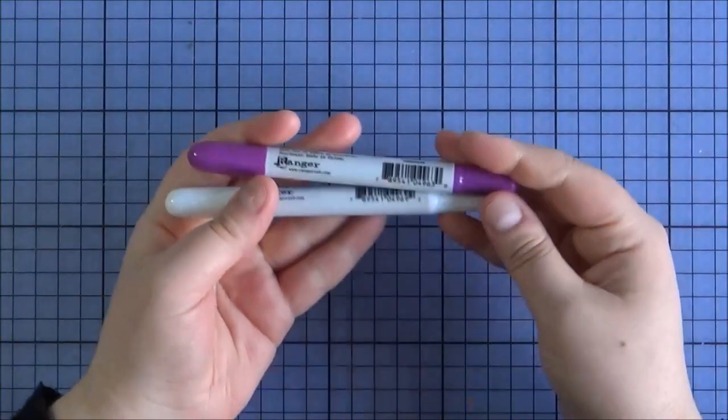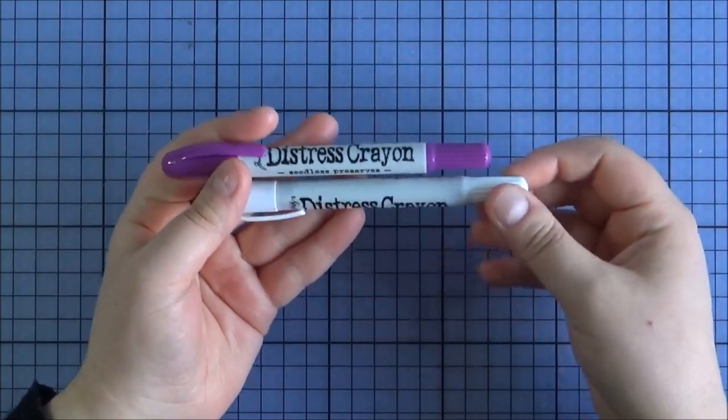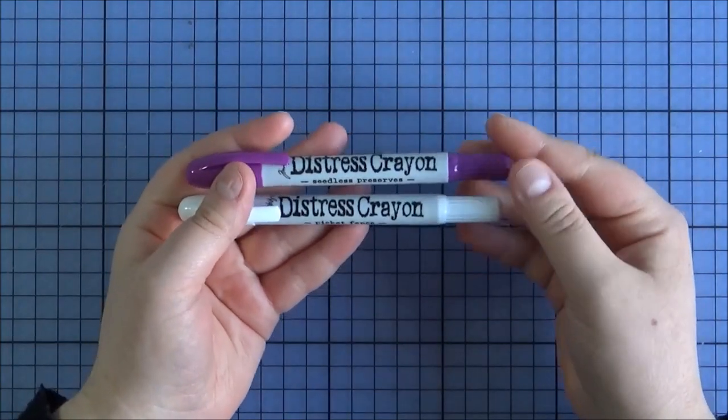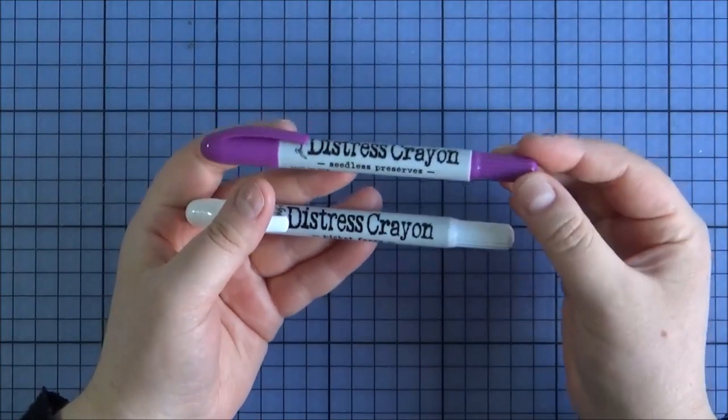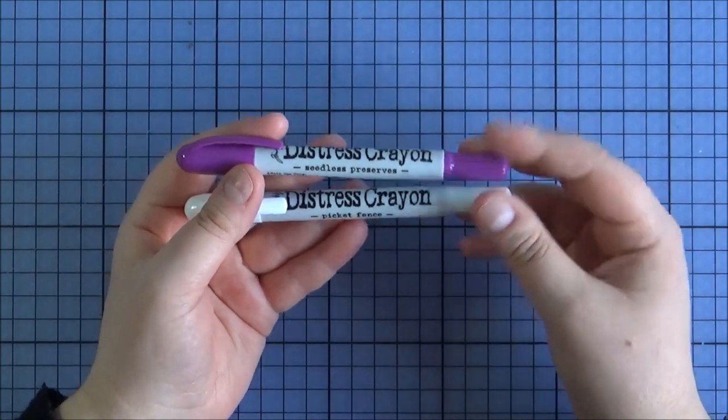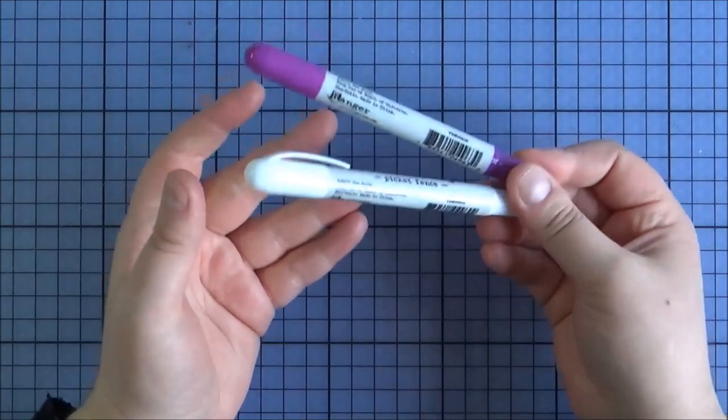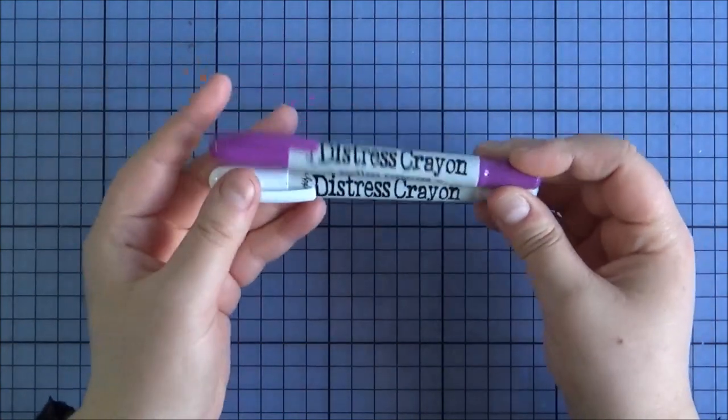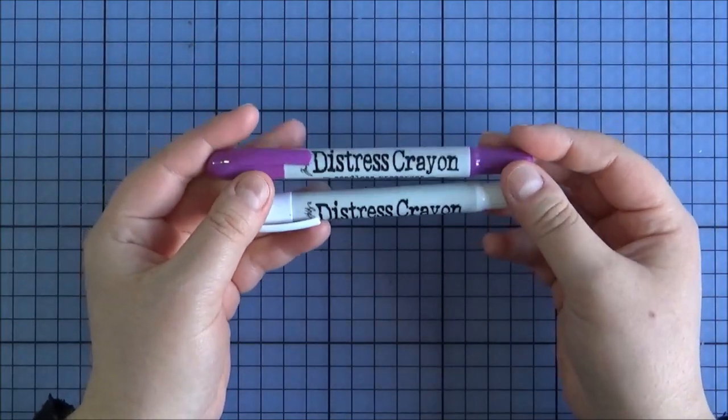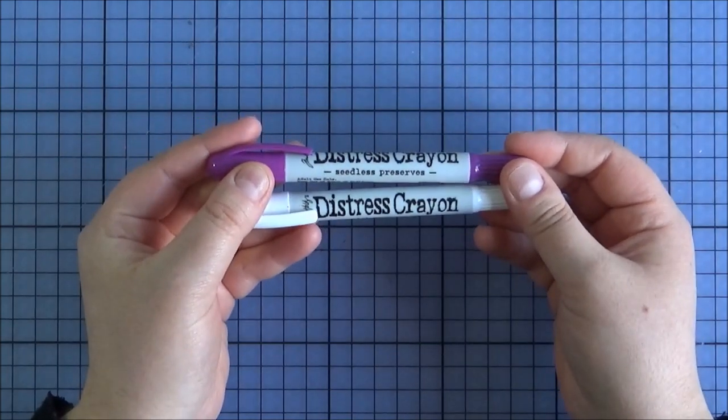And then I also picked up two of the Distress crayons. They're now selling them separately over at Simon Says Stamp. So I wanted to go ahead and pick up the Seedless Preserves and the Picket Fence. I do already have the Brights collection and I don't think I need any more than that. I really love purple, and I thought the white would be quite versatile to use as well. So looking forward to trying out those.